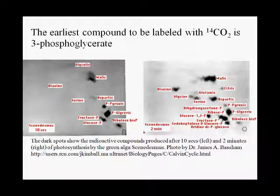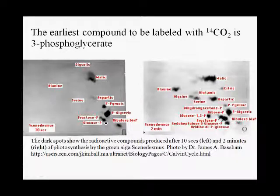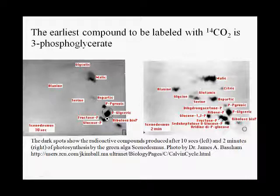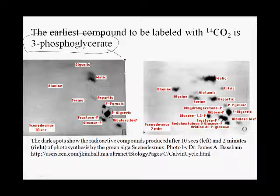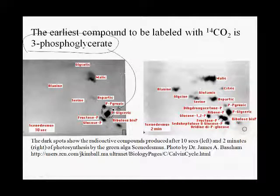When they went to shorter and shorter time points, fewer and fewer molecules became labeled. Even at 10 seconds, glucose was labeled, but the most intensely labeled spot was phosphoglyceric acid, also known as 3-phosphoglycerate. At even shorter times of 5 seconds, 3-phosphoglycerate was pretty much the predominant radioactively labeled spot.